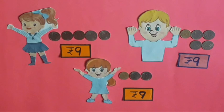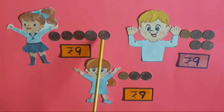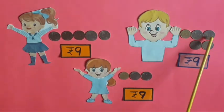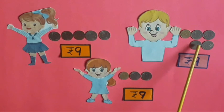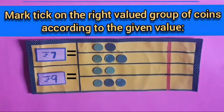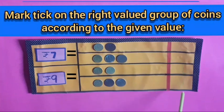So children, equal to the value of rupees 9, we can take 4 coins of 2 rupees and 1 coin of 1 rupee, or 1 coin of 5 rupees and 4 coins of 1 rupee, or 1 coin of 5 rupees and 2 coins of 2 rupees. Now we will mark tick on the right valued group of coins according to the given value.